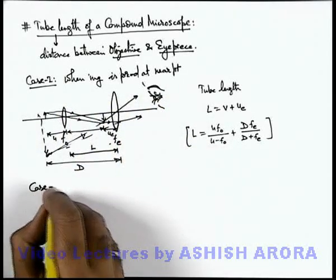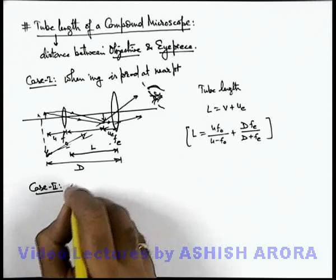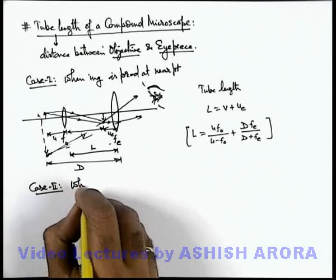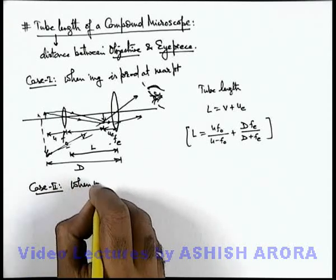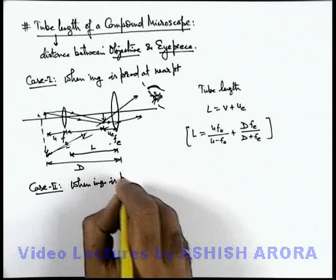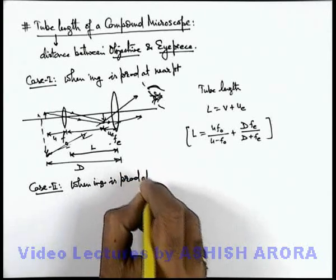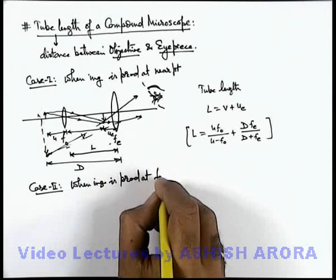Similarly, Case 2 is when the image is produced at the far point.